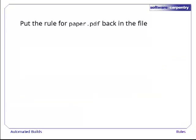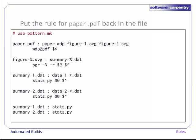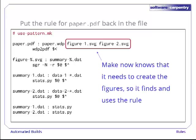Let's do this by putting the rule for paper.pdf back in our MAKE file. Here's the full MAKE file. In it, paper.pdf depends on figure1.svg and figure2.svg. MAKE now knows that it needs these figures. Since there aren't specific rules for them, it uses the pattern rule instead.